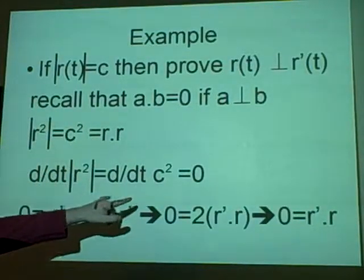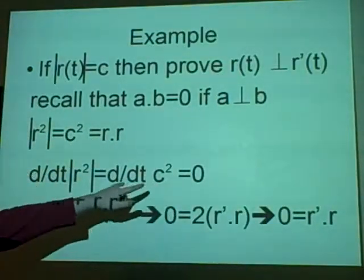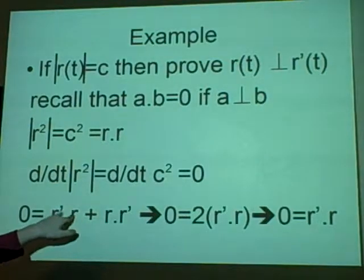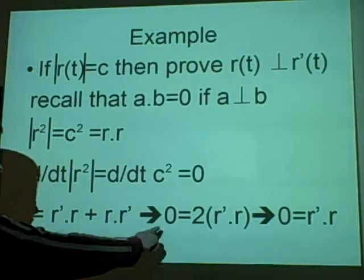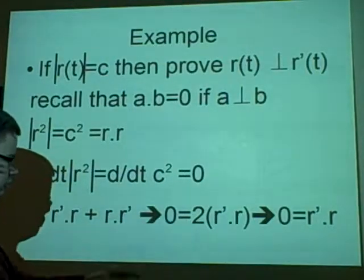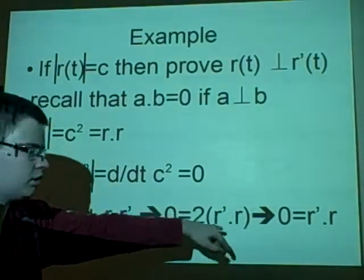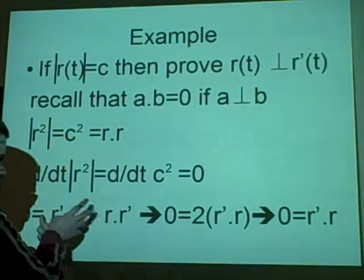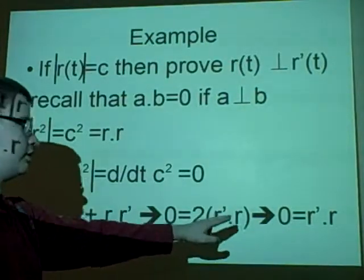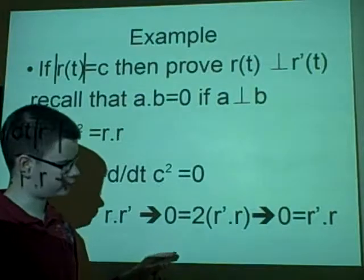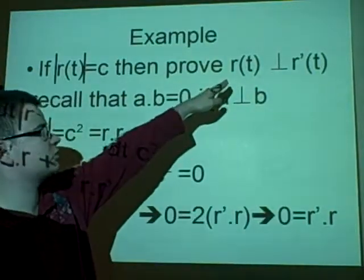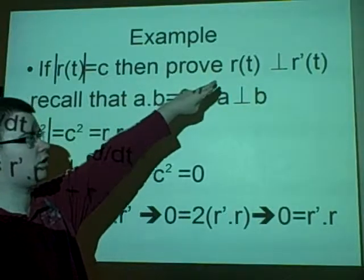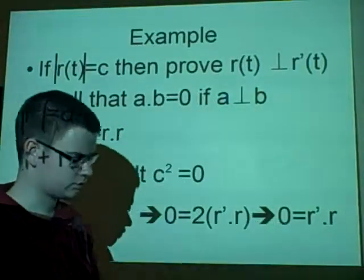So we've just said, by finding the derivative of that, that zero is equal to r'·r plus r·r', using the product rule. Which leads us to that zero equals 2r'·r, because we can take that out as a factor and put it into two. And then we can move this two over, so that zero equals r'·r, which is what we've just proved here. So we've just proved that r is perpendicular to r' when |r| = c.